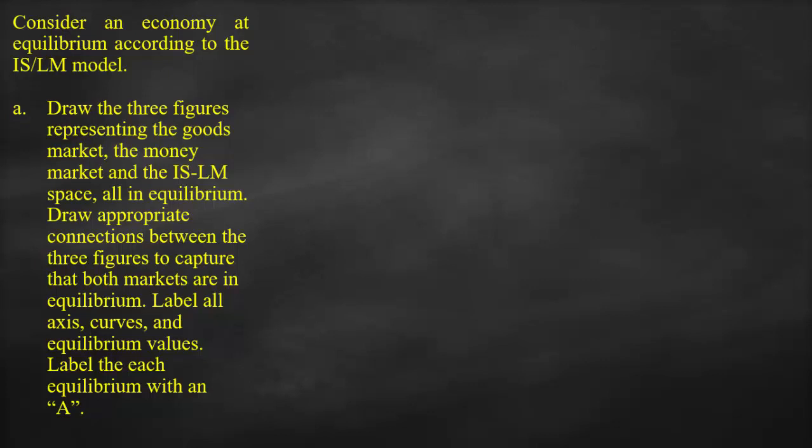The question asks us to consider an economy at equilibrium according to the ISLM model. Draw the three figures representing the goods market, the money market, and the ISLM space, all in equilibrium. Draw appropriate connections between the three figures to capture that both markets are in equilibrium. Label all axes, curves, and equilibrium values. Label each equilibrium with an A.